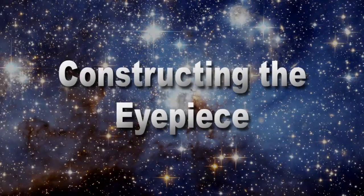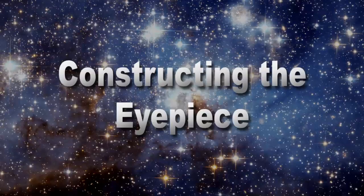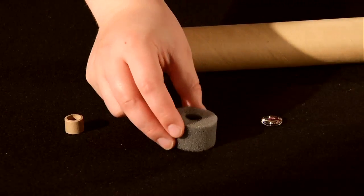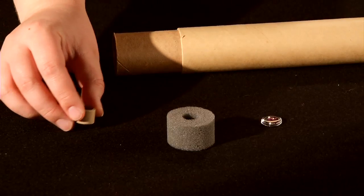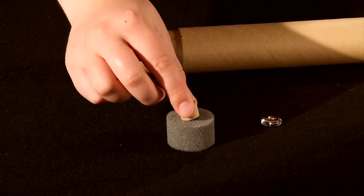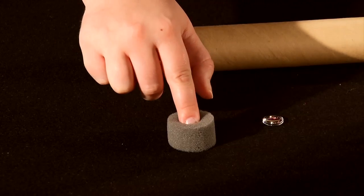Now we want to construct the eyepiece end of the telescope, which is the end you will look through. Start by placing the piece of foam down on a table. Put the cardboard spacer into the hole in the foam and push it all the way down until it's flush with the bottom of the hole.